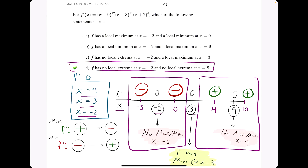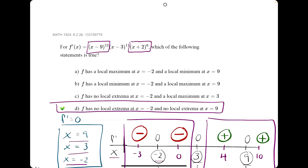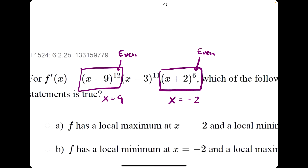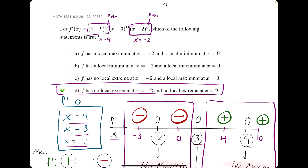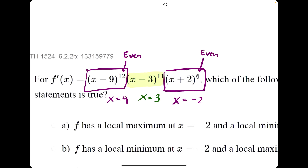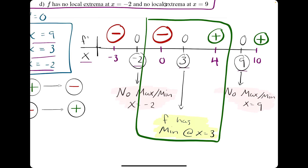The key lesson here: f had no max or min at negative 2 or 9 because those factors had even exponents, which do not allow the sign to change. Only x equals 3, coming from the factor with an odd exponent, had a max or min. So when you have even exponents, those x values will not have local extrema; when they have odd exponents, those x values will have either a max or a min — though you still need a number line to determine which.